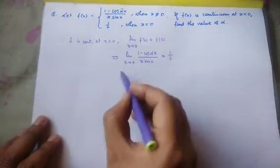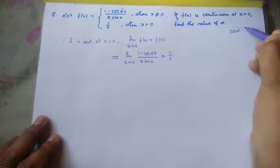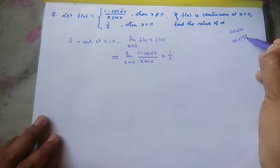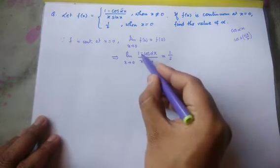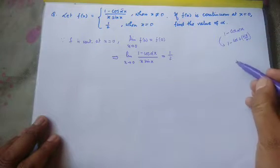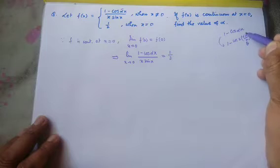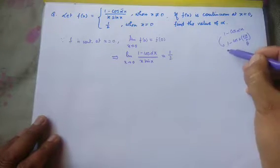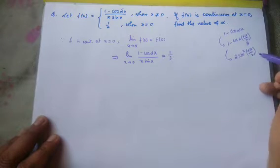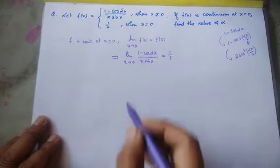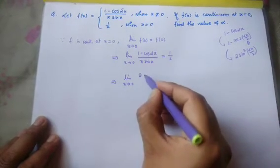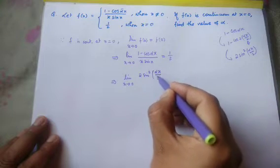So we have: limit x tends to 0 of 2 sin²(αx/2) divided by x sin x equals 1/2. Now I am going to divide both numerator and denominator by x squared. There is a very famous formula which says: limit x tends to 0 of sin(x)/x equals 1. Since there is a square here, to make sin(x)/x form, I will divide both numerator and denominator by x squared.